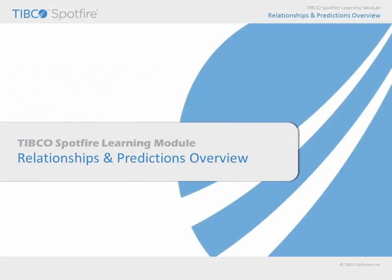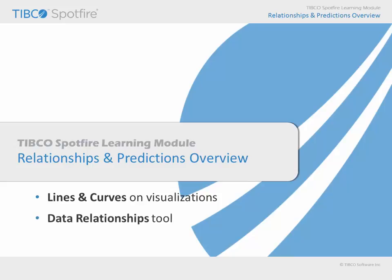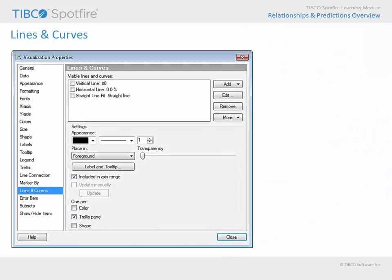In this learning module, we will perform a high-level overview of topics covered under the umbrella of relationships and predictions. These include the addition of lines and curves to visualizations, the application of the data relationships tool to perform pairwise comparisons, and the construction of predictive models through regression modeling or classification modeling options. We will begin by discussing the capabilities presented in the Lines and Curves section of the Visualization Properties dialog.